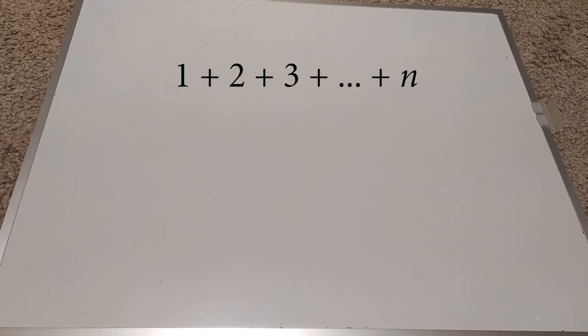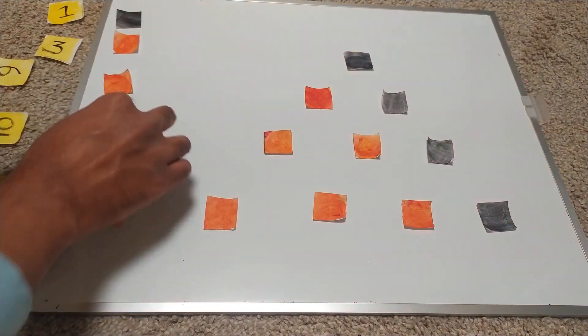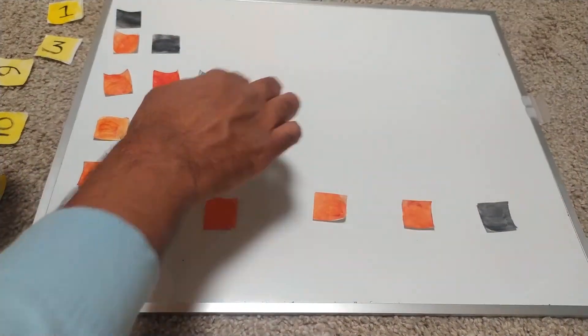First up, the sum of first n natural numbers is given by the formula n times n plus 1 over 2. Where does this come from? Let's take our equilateral triangle and push it towards the side to make a right-angled triangle.